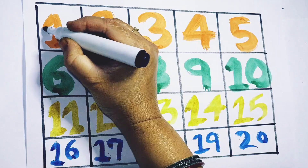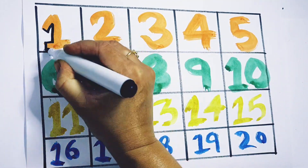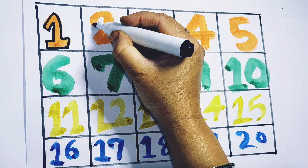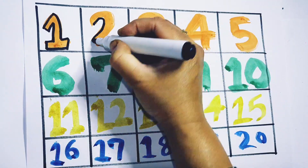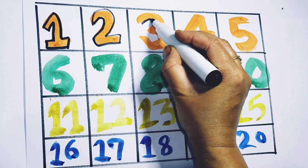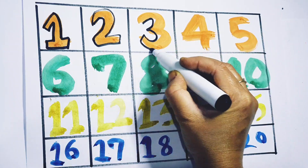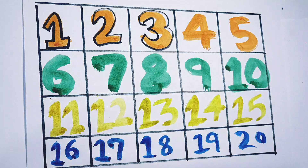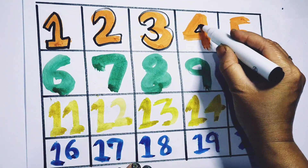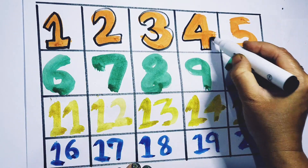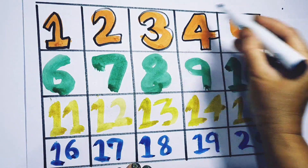Black color. 1 — O, N, E — 1. 2 — T, W, O — 2. 3 — T, H, R, E, E — 3. 4 — F, O, U, R — 4.